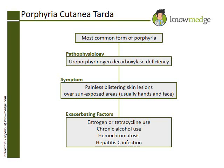Along with Choice B, estrogen use, all of these are exacerbating conditions for PCT. Choice A, associated with ATP7B gene mutation, is describing Wilson's disease, which is not an exacerbating condition or factor for PCT.